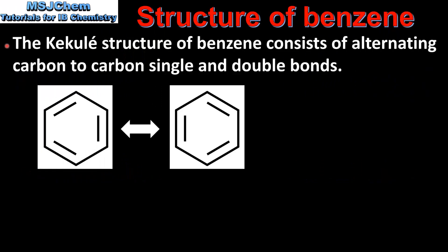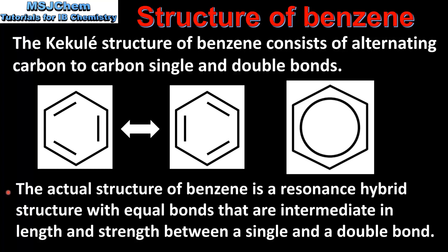We'll start with a quick review of the structure of benzene. The Kekulé structure of benzene consists of alternating carbon-to-carbon single and double bonds. Here we can see the two resonance structures of benzene, which have alternating carbon-to-carbon single and carbon-to-carbon double bonds. The actual structure of benzene is a resonance hybrid structure with equal bonds that are intermediate in length and strength between a single and a double bond.